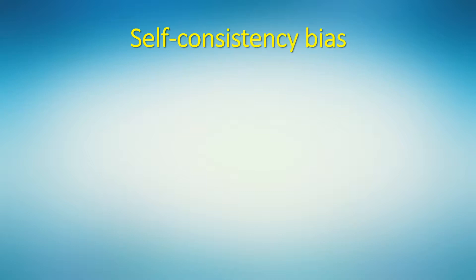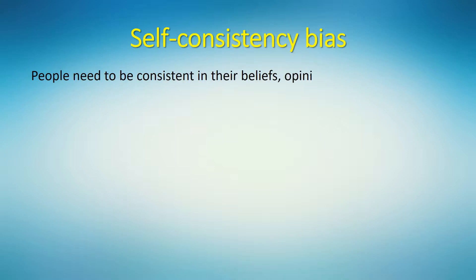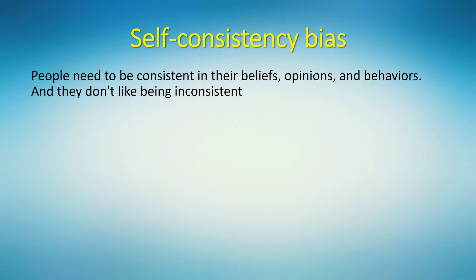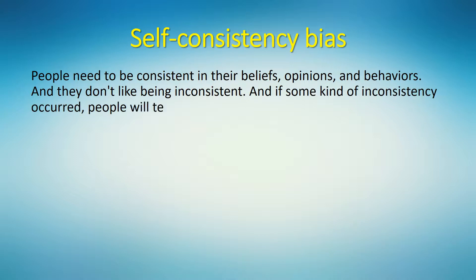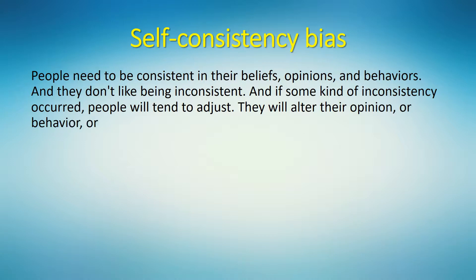Let's learn about one more cognitive bias today: the self-consistency bias. This theory says that people need to be consistent in their beliefs, opinions, and behaviors, and they don't like being inconsistent. If some kind of inconsistency occurs, people will tend to adjust — they will alter their opinion, behavior, or even memory in order to achieve consistency.